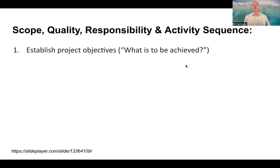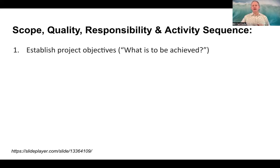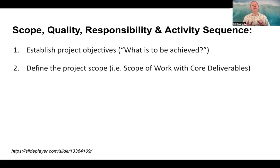The first thing you want to do is establish the project objective — what is to be achieved? If you don't know the outcome of what the project is, none of the rest of the stuff matters. By having a clearly defined objective and an outcome, the rest of this will become easy because that clear objective will lead to the project scope.